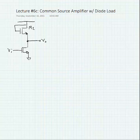Okay, so let's examine the common source amplifier with the NMOS diode connected load. We will start by noting that we'll call this output node, node A.